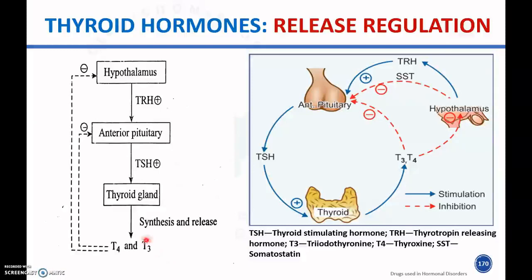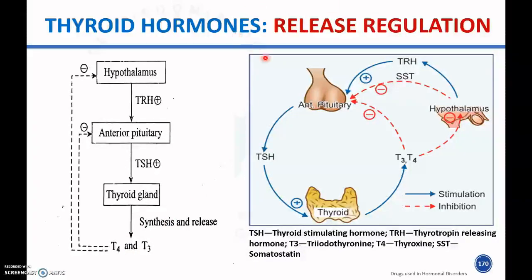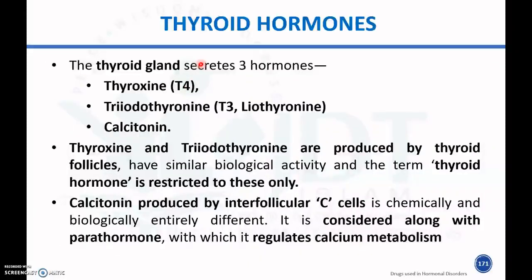The release of thyroid hormone is also regulated by the hypothalamus. The hypothalamus releases thyrotropin-releasing hormone when there is a deficiency of thyroid hormone. This thyrotropin-releasing hormone stimulates the anterior pituitary to release thyroid stimulating hormone, which in turn stimulates the thyroid gland for the synthesis and release of thyroid hormones.